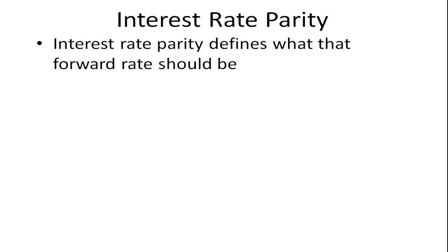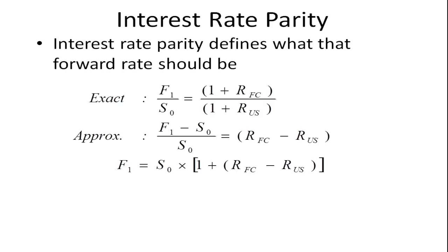Interest rate parity defines what the forward rate should be. The exact equation says that the forward rate divided by the spot rate equals one plus the foreign country's interest rate, divided by one plus the US interest rate.